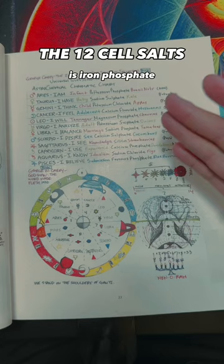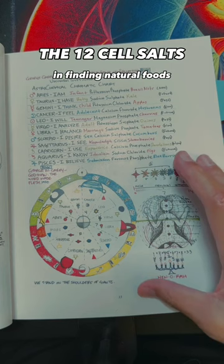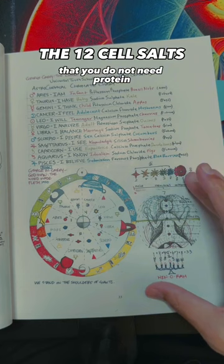Now understand that you can further your knowledge in finding natural foods in correspondence with all of these specific cell salts. This is for the exact reason why I explained to you that you do not need protein. You need minerals.